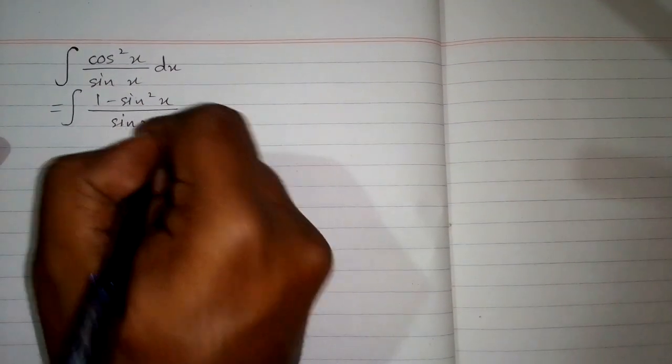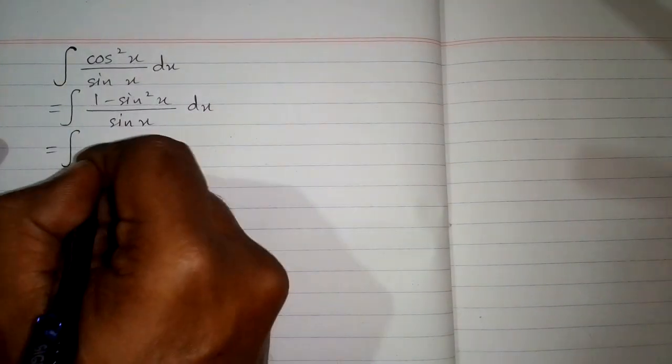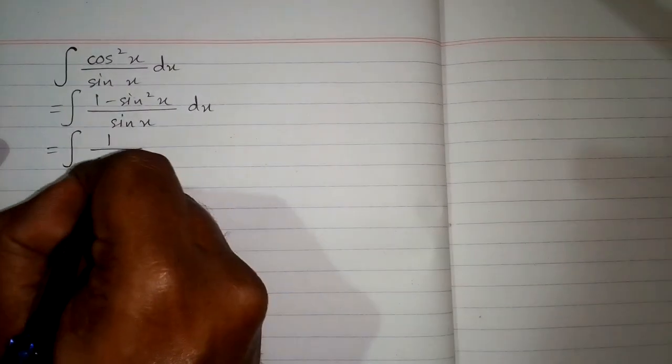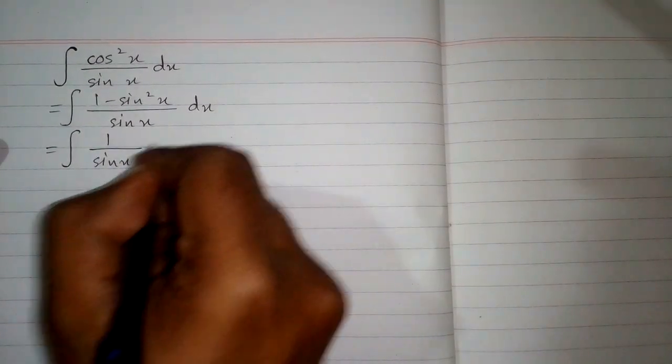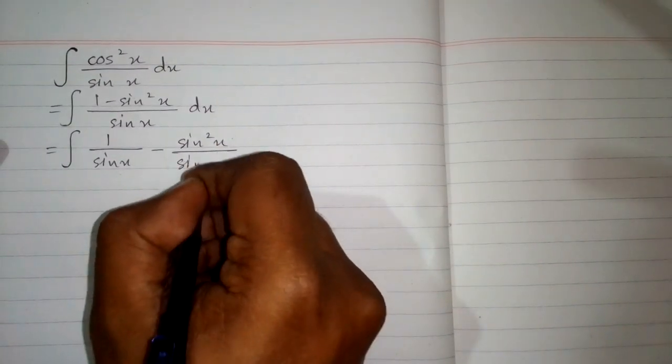So we have 1 minus sin square x upon sin x. And this fraction can be written as 1 upon sin x minus sin square x upon sin x.